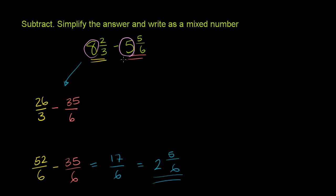So first we could view this as 8 minus 5. So let's do this. 8 minus 5, that's subtracting the whole number parts. Plus 2 thirds minus 5 sixths. Now, 8 minus 5, that's easy. That's 3.